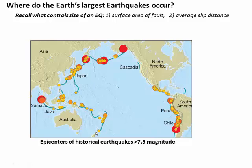So why are these the biggest quakes on earth? The answer lies in what controls the magnitude or size of an earthquake. There are a couple of things in that equation: one was the surface area of the fault — the area that slips — and then the distance over which it slips.